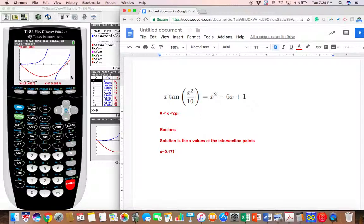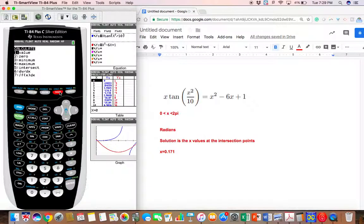Now we want to find both solutions in the given domain, so we are also interested in this x-value. To find that x-value, we go through the same steps: second trace, option 5 (intersect), first curve press enter, second curve press enter. Then we can scroll to our other guess or type what x-value we think is around there. I'm going to scroll.